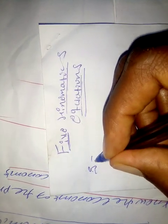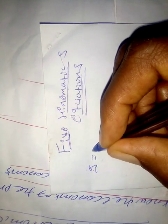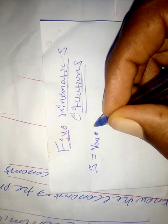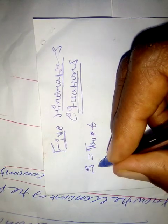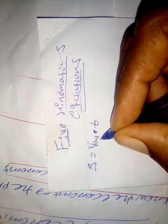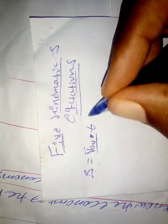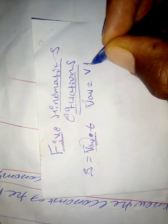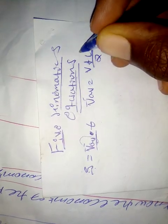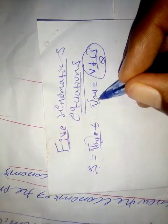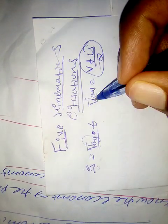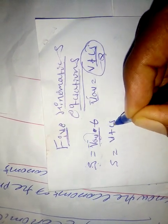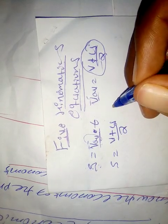Distance is the average velocity times time taken. This is the average velocity times time taken. We can see the average velocity. The average is the average velocity. The initial velocity is the average time taken. This is V plus U over two.